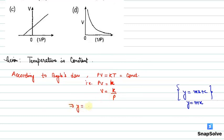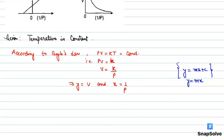So here, y-coordinate is V and x-coordinate is 1 by P. So if we create a graph, then this graph will be a straight line passing through the origin. This graph will be made where the x-coordinate is 1 by P, and this graph will pass through the origin.